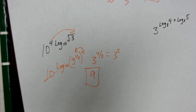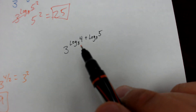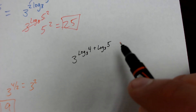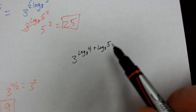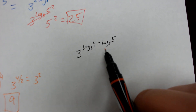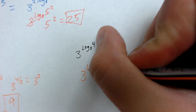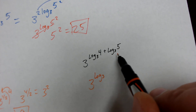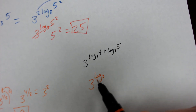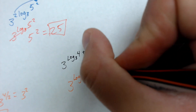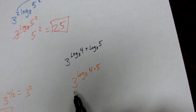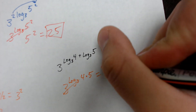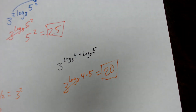Last example: 3 to the log base 3 of 4 plus log base 3 of 5. This is a product rule of logarithms situation. I rewrite the exponent as log base 3 of (4 times 5) using the product rule, which combines the two log base 3 terms. Now I have touching logarithms — they cancel — and 4 times 5 equals 20, which is the answer. We learned how to combine logarithmic rules and a couple of new rules about logarithms. That's all for lesson 59 — any questions, let me know on Moodle.